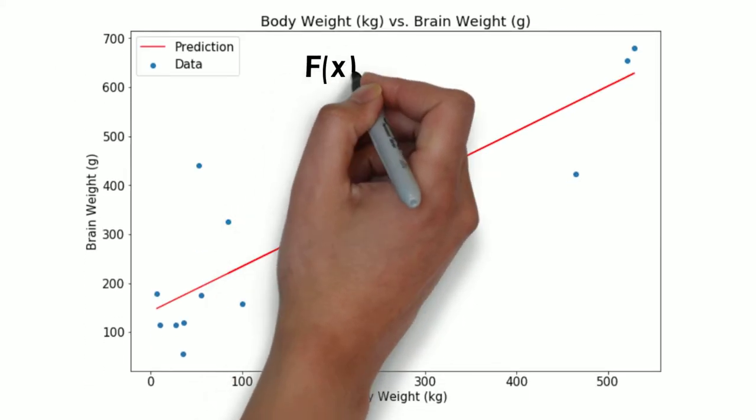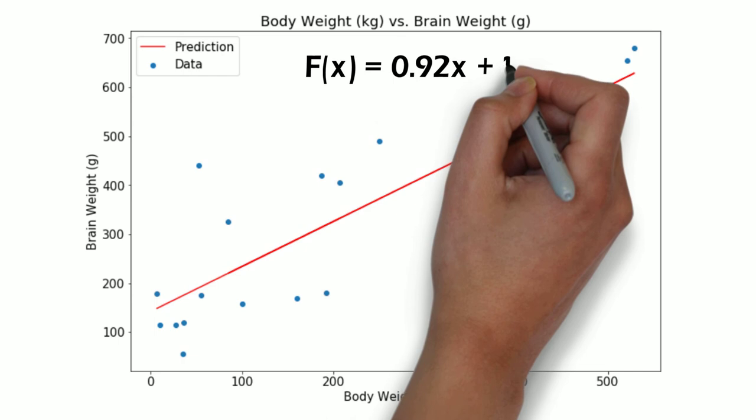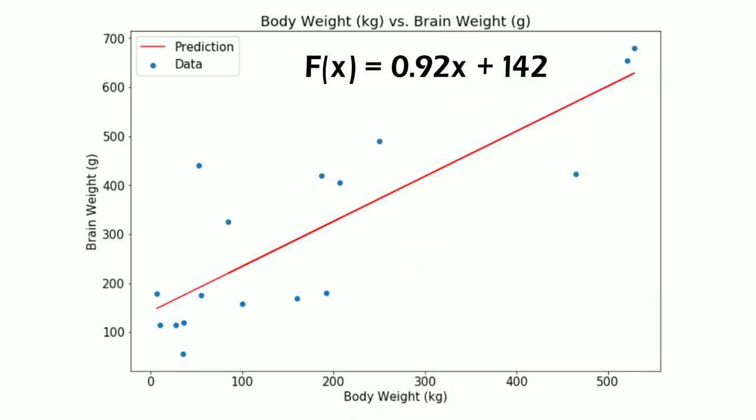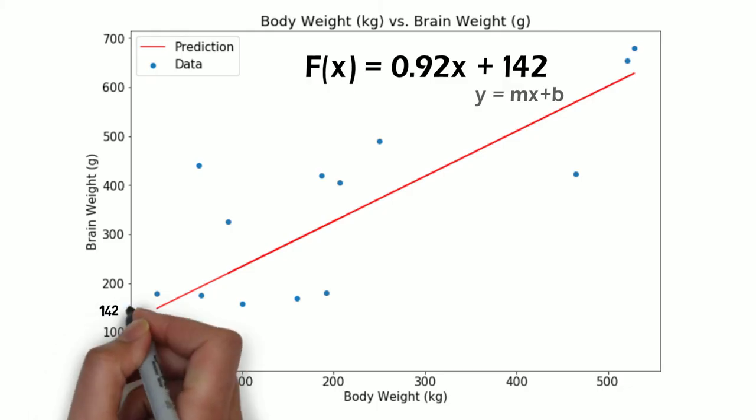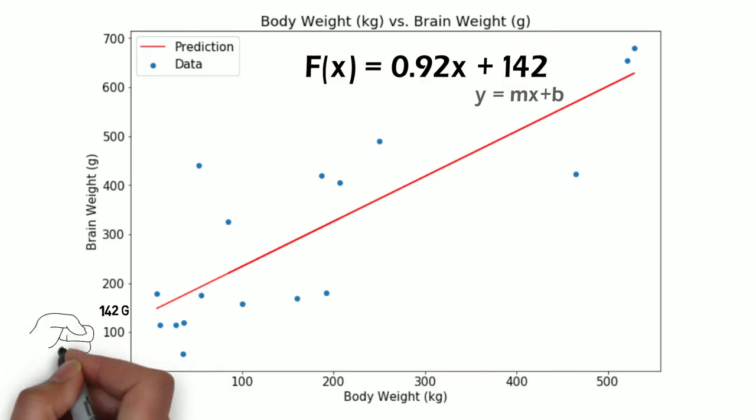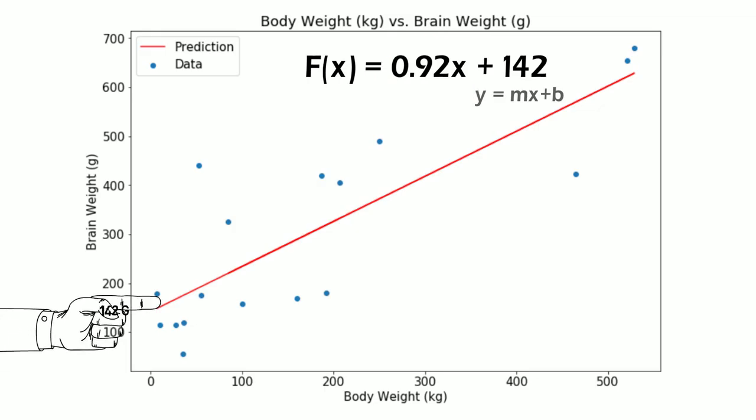Additionally, the regression line can be seen as a function with the following parameters. You might recognize this equation as y equals mx plus b. This function represents the red line and is calculated with statistical software according to the previously shown least squares technique. The parameters mean that starting from 142 grams of brain weight, each increase of 1 kilo in body weight will increase the brain size by 0.92 grams.